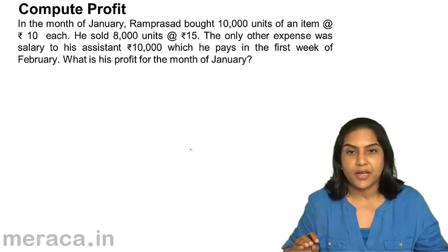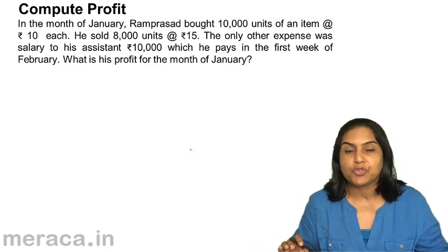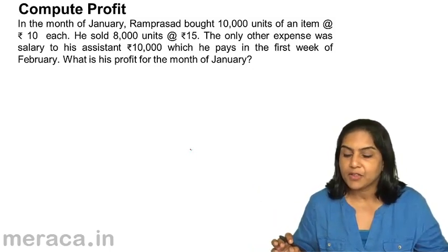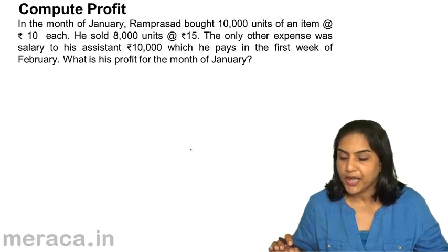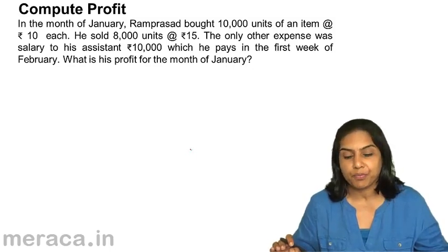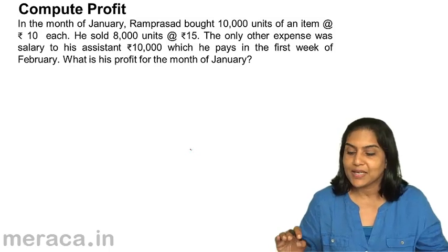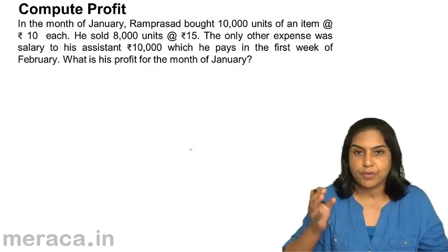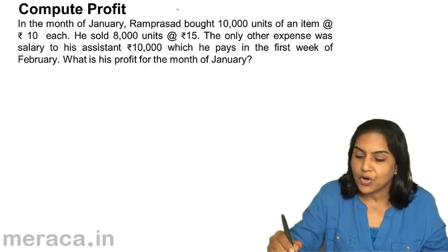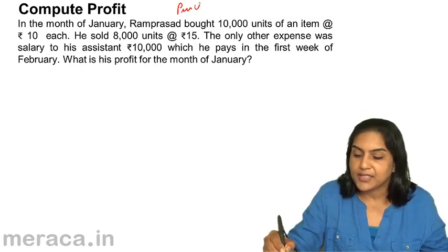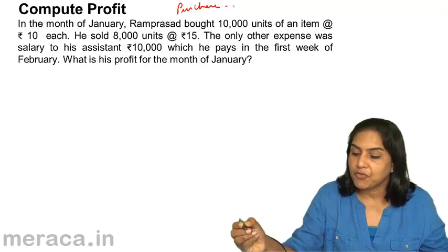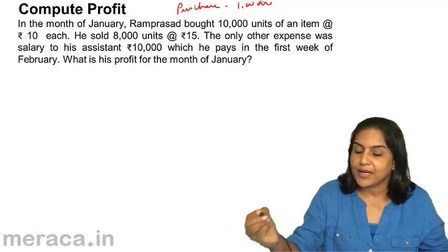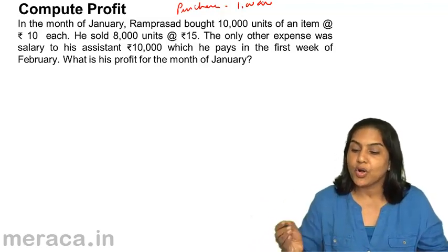In this particular example, we may compute profit in different ways. In the month of January, Ram Prasad bought 10,000 units of an item at rupees 10 each — so basically there have been purchases. When he bought goods, we call it purchases: 10,000 units at 10 each, totaling 1 lakh.